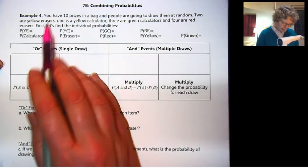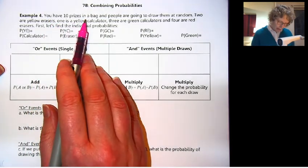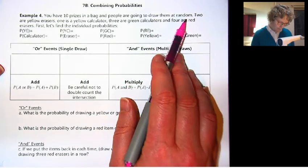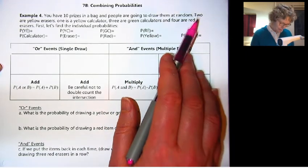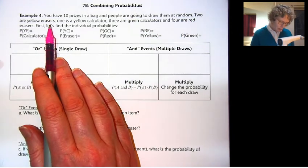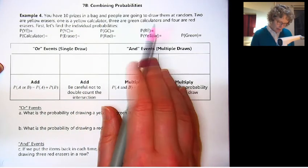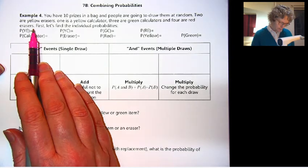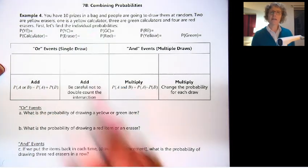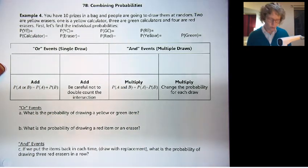So here's an example. You have 10 prizes in a bag, and people are going to draw them at random. These are academic prizes. Two are yellow erasers, one is a yellow calculator, three are green calculators, and four are red erasers.